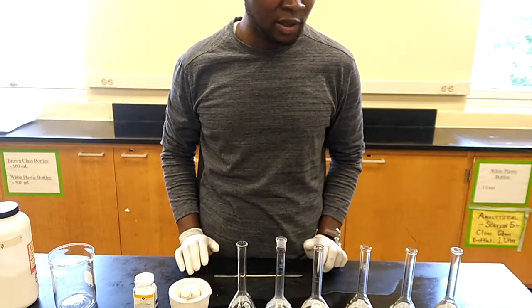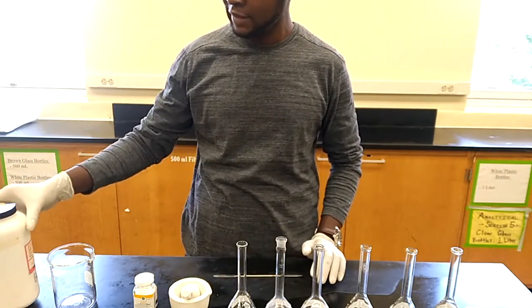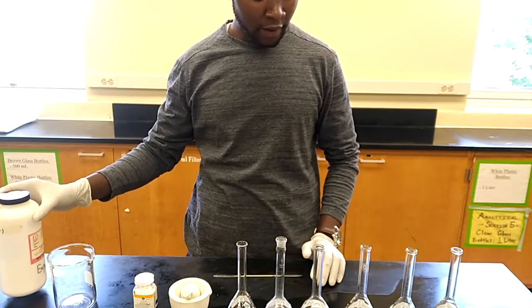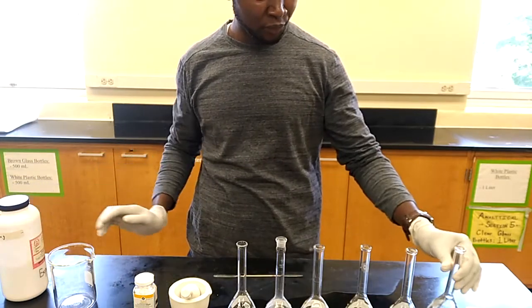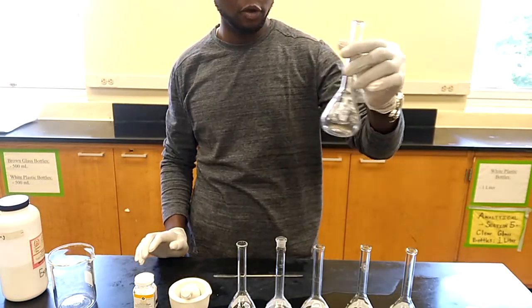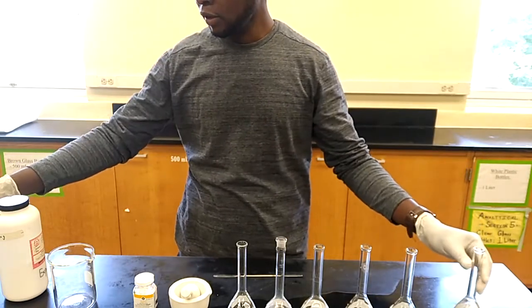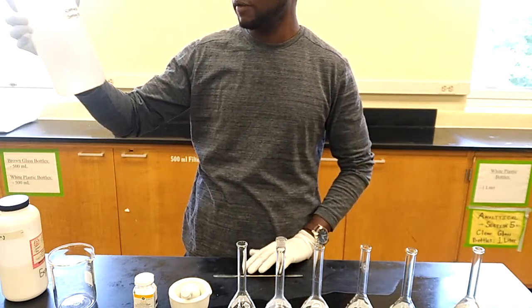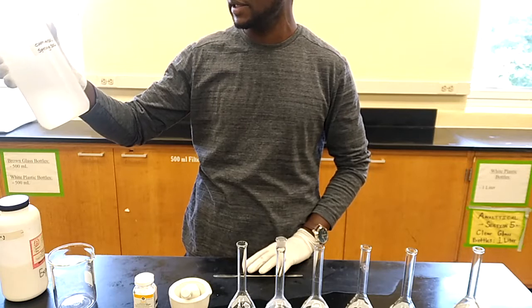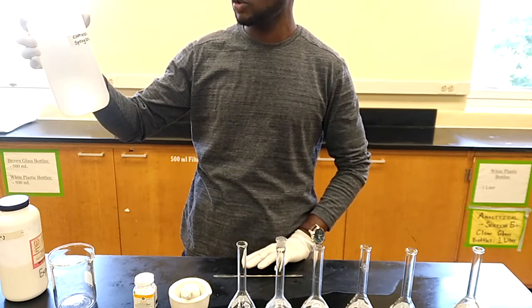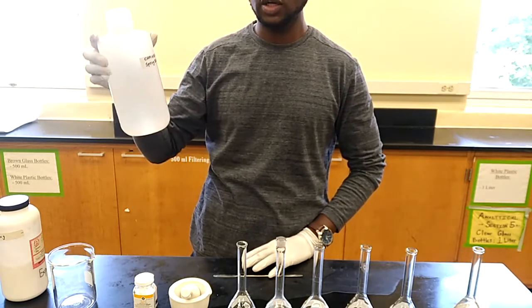This will be done by weighing 7.1 grams of salicylic acid into a 100 ml volumetric flask, and the solvent that will be used to dissolve the salicylic acid is 0.1 molar sodium hydroxide, which is here. It has already been prepared.